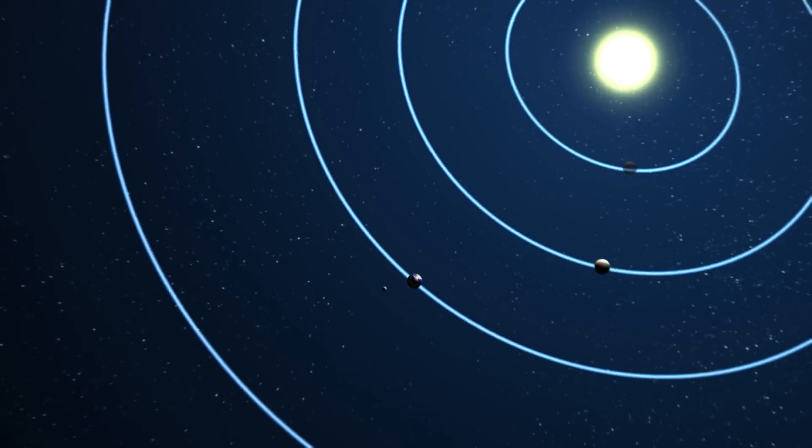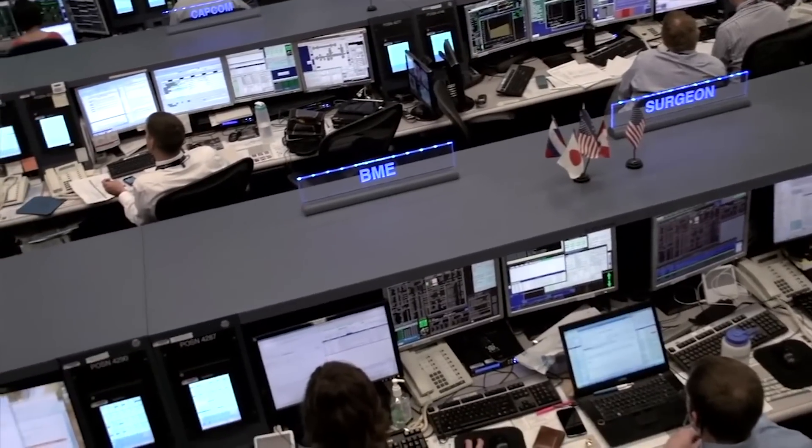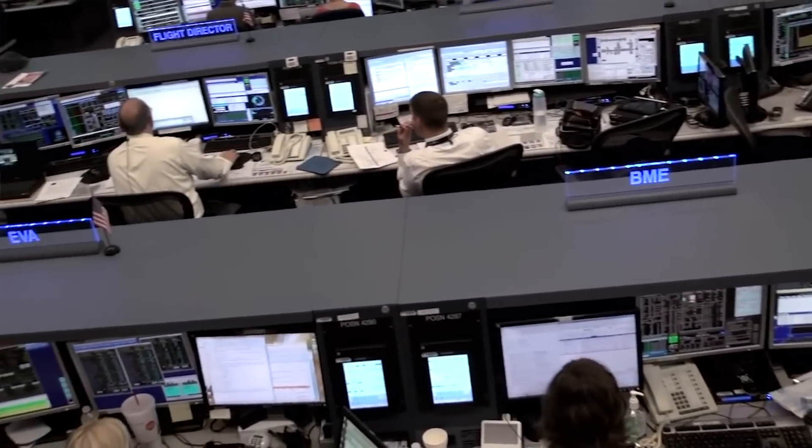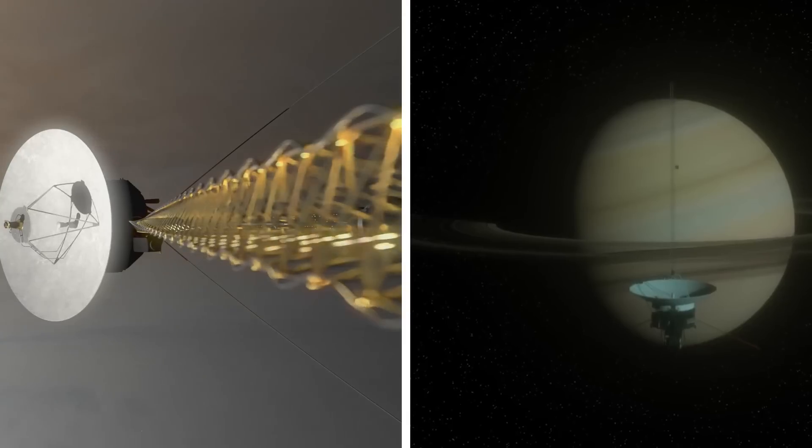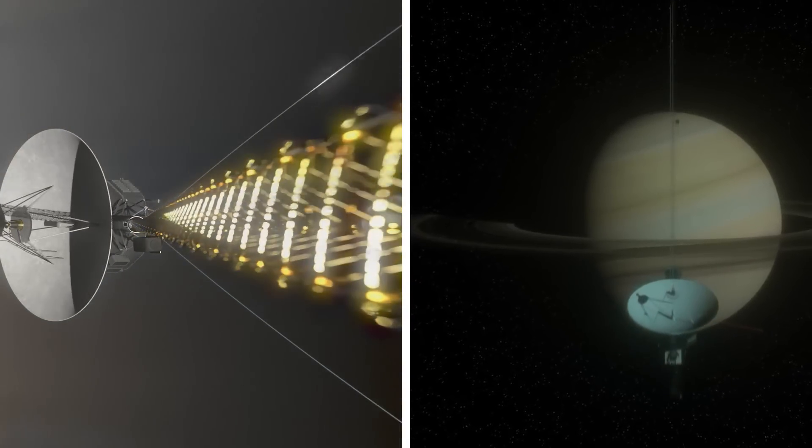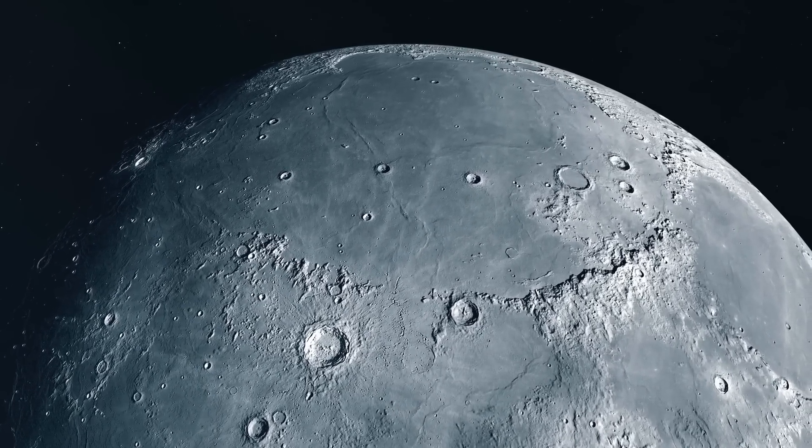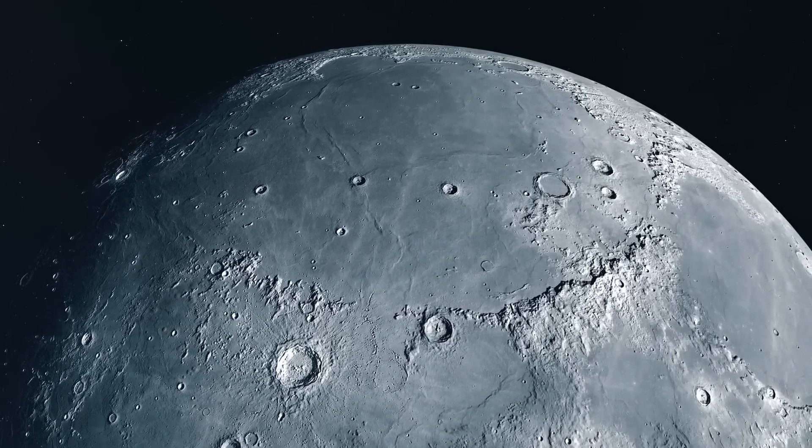When they first ventured into the outer reaches of our solar system, their discoveries stunned scientists and shattered preconceived notions. Jupiter and Saturn were not the cold, dead planets we once thought. Instead, they were alive with moons brimming with volcanic fury and icy secrets.